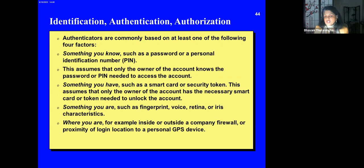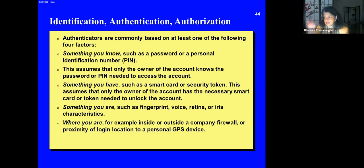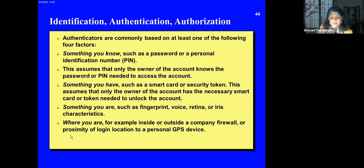Identification and authentication are commonly based on something you know — a PIN or password — assuming only the account owner knows it. Something you have: a smart card or security token, like an RSA security token. Something you are: biometrics — fingerprint, voice, retina, iris. And we also have two-factor authentication via phone number with texted codes or email, which could fall under something you have.